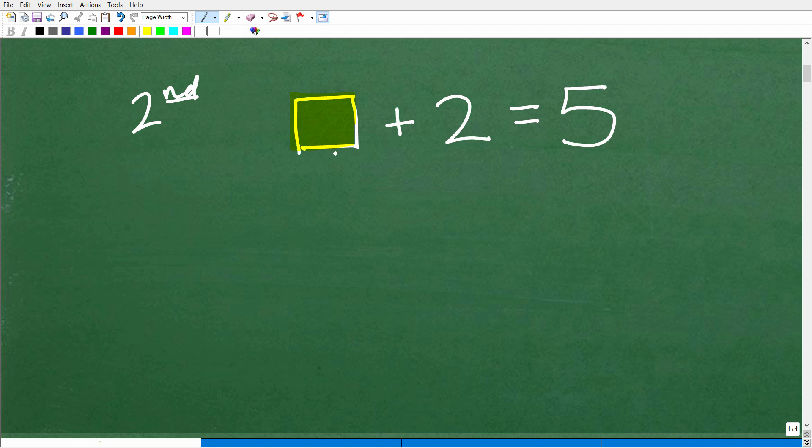An equivalent way to write this is x plus 2 is equal to 5. This is in fact an equation. So x and this box are representing the same thing. So first, let's just make sure you understand what a variable is in algebra.